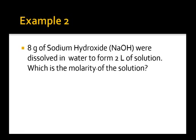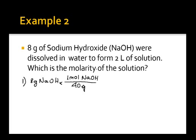In this second example, we have 8 grams of sodium hydroxide that we need to convert to moles. We know that 1 mole of sodium hydroxide is 40 grams. That means the number of moles of sodium hydroxide is 0.2.